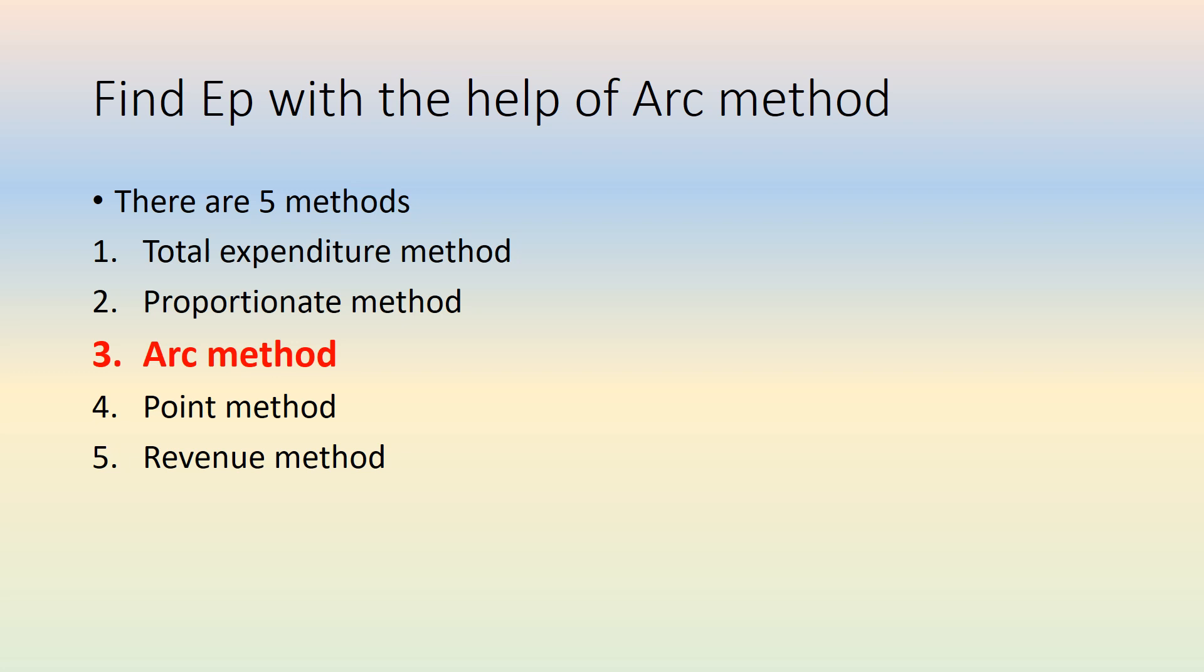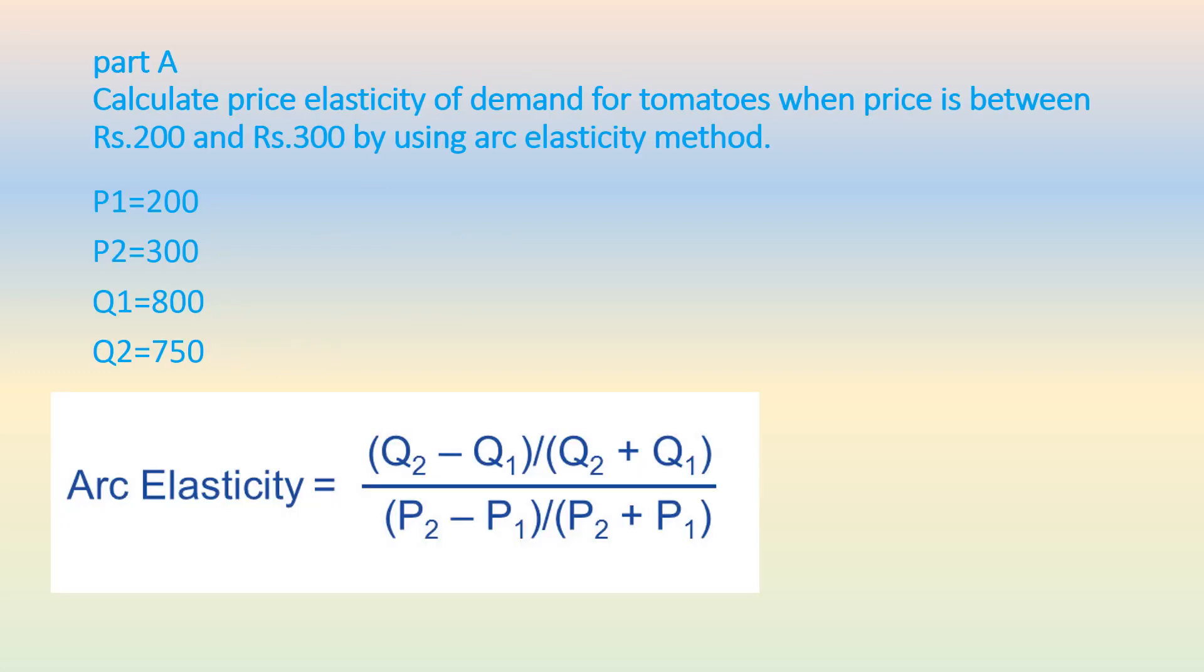Part 1: Calculate price elasticity of demand for tomatoes when price is between 200 and 300 using arc elasticity method. P1 is the original price, P2 is when the price went up to 300. Q1 is the original quantity demanded at 800, but when the price went up to 300, demand came down to 750 kg.